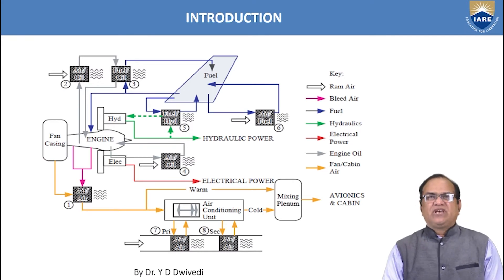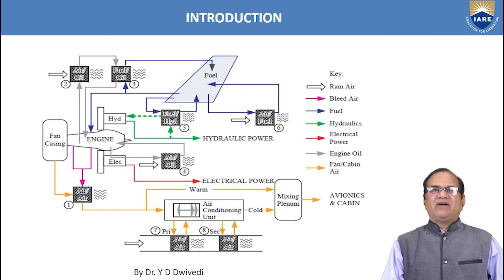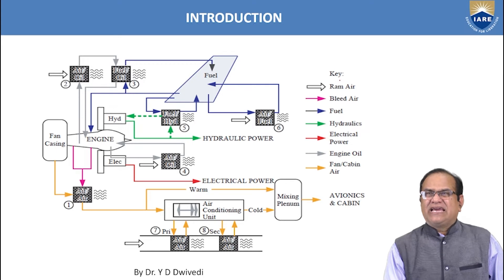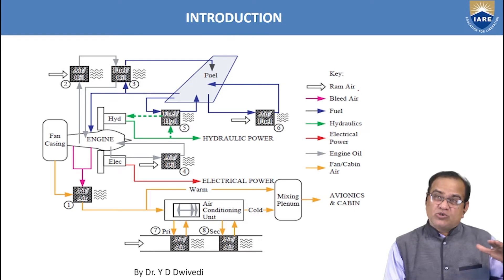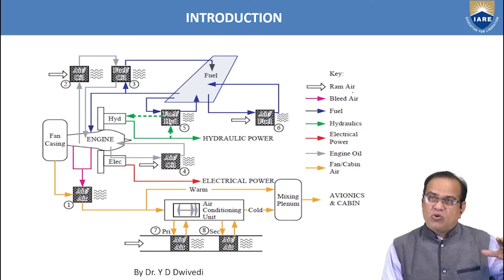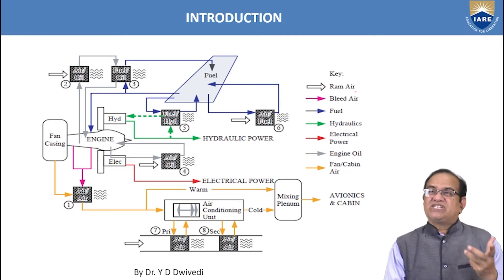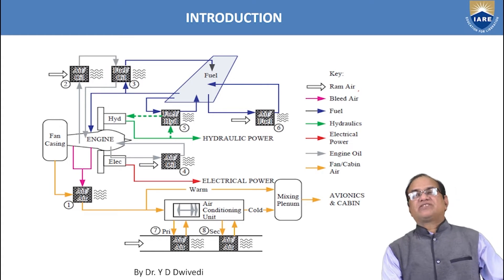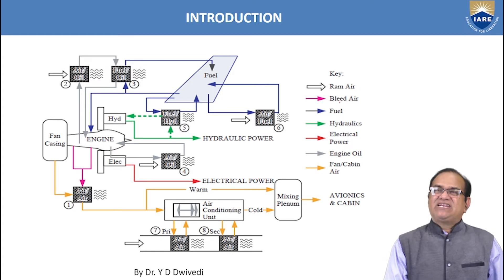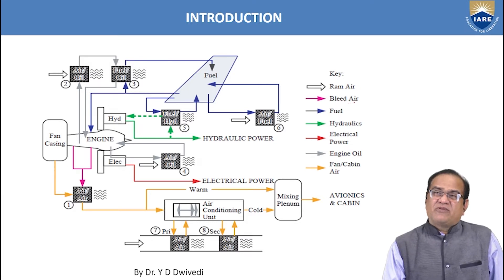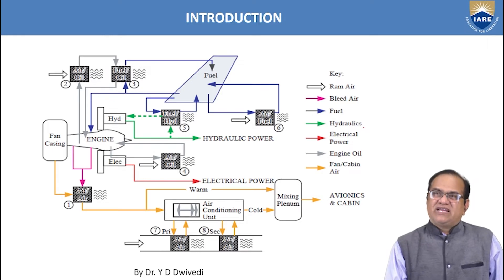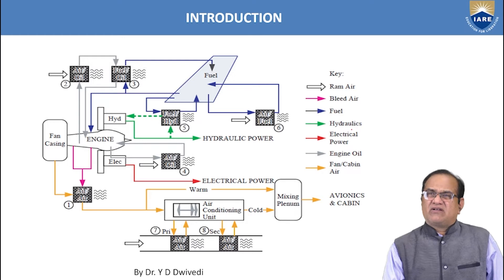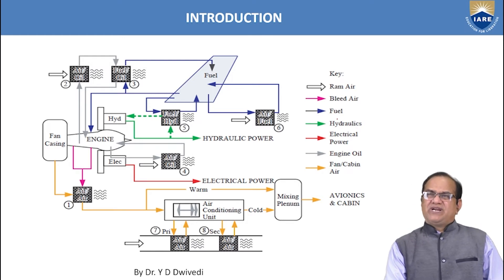Now looking at this diagram showing key aircraft systems: RAM air is the air pressurized by the motion of the aircraft — as the aircraft moves, air is compressed and pressure increases, and this air is used for emergency requirements. Bleed air is tapped from the engine after a few stages of the compressor. Fuel is used for burning inside the engine. Hydraulic systems operate the landing gears, doors, flaps, and control surfaces.